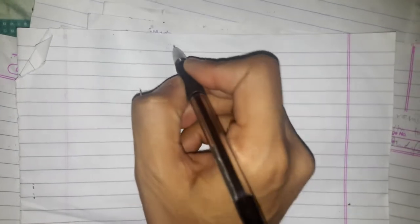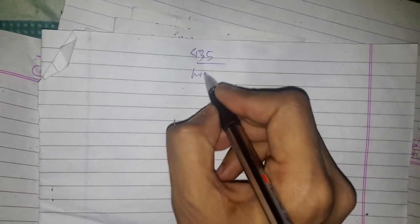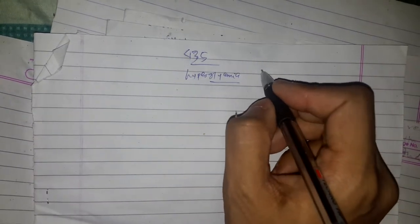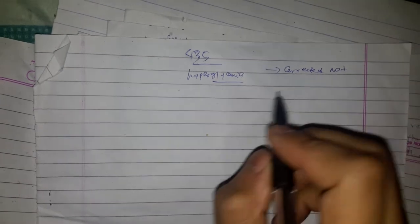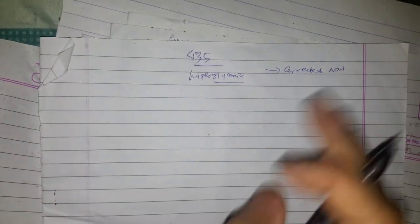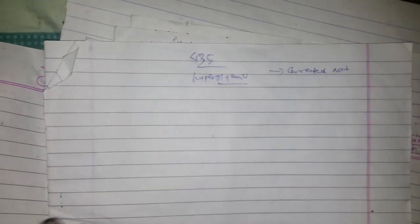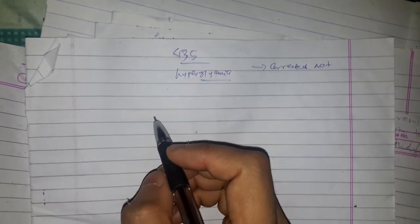Let's discuss how to approach a case of hyponatremia — sodium less than 135 milliequivalents per liter. First, we have to evaluate whether hyperglycemia is present or not. If there is hyperglycemia, you have to calculate the corrected serum sodium, as there may be hyperglycemia-induced hyponatremia. I've discussed this correction in another video.